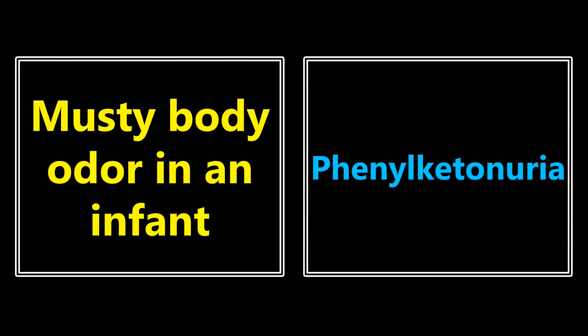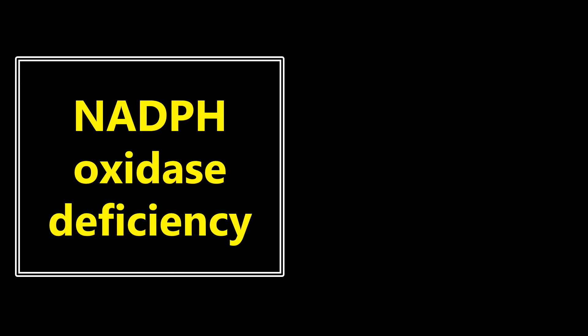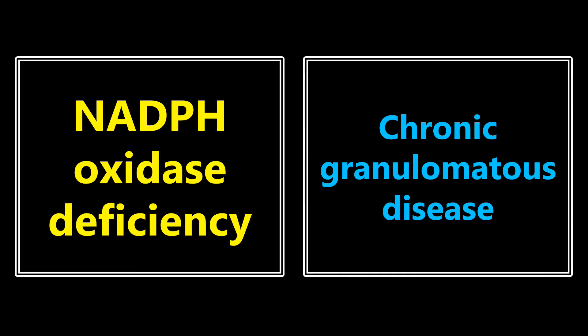Musty body odor or mousy body odor in an infant — most medical students know this one — it's phenylketonuria. NADPH oxidase deficiency is another enzyme deficiency you really need to know, and it's a sign of chronic granulomatous disease. This is where immune cells can't form the oxidative burst to destroy microorganisms.